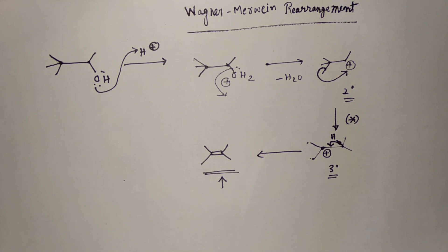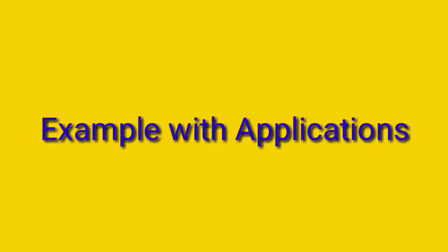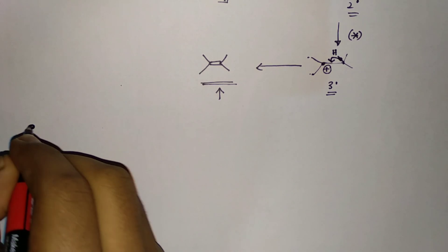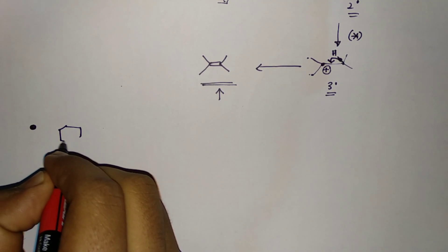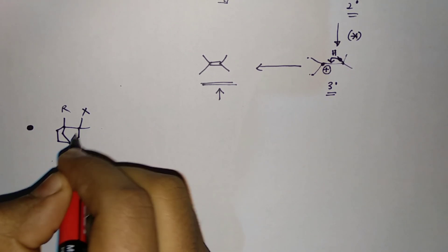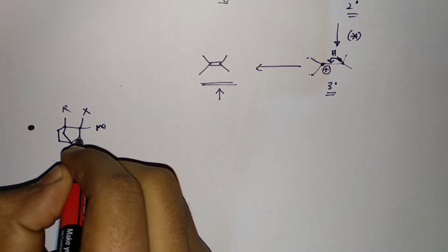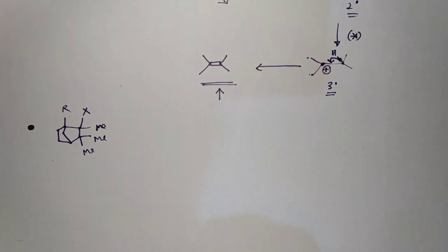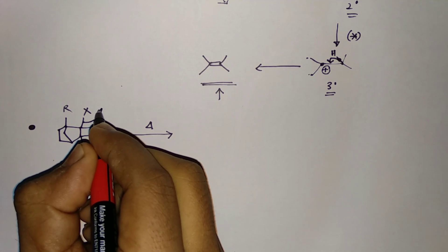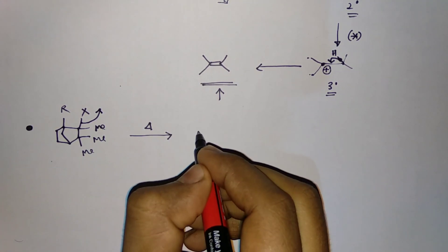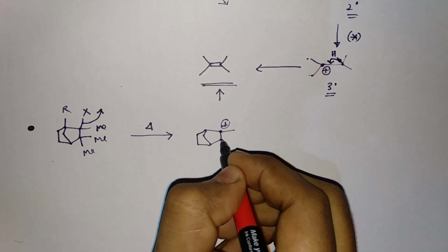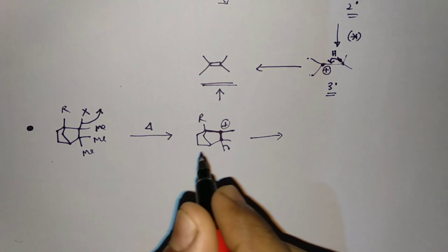Let's look at another example with a different kind of migration — hydrogen migration. Consider a system with an R group, a halogen X (bromine, chlorine, iodine, etc.), one methyl group, and two methyl groups. When heated, since halogen is a good leaving group, it leaves the system.